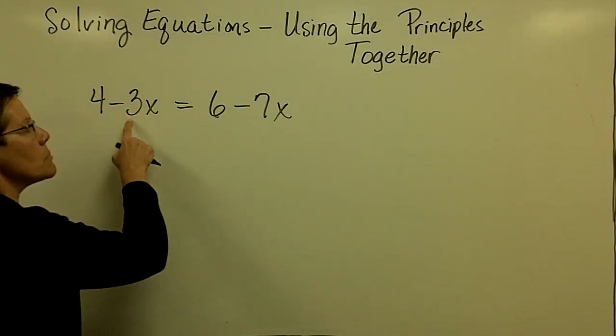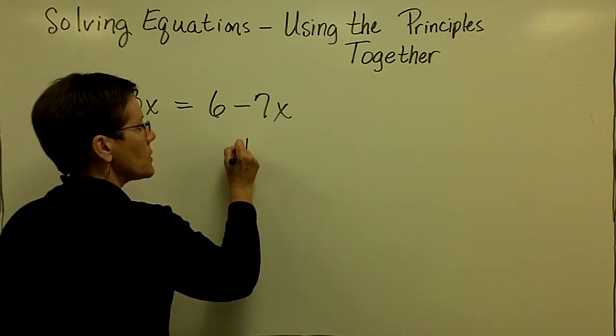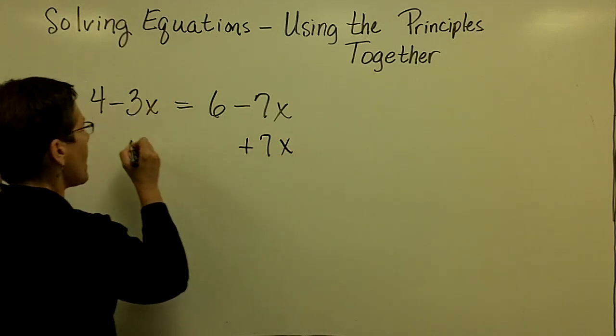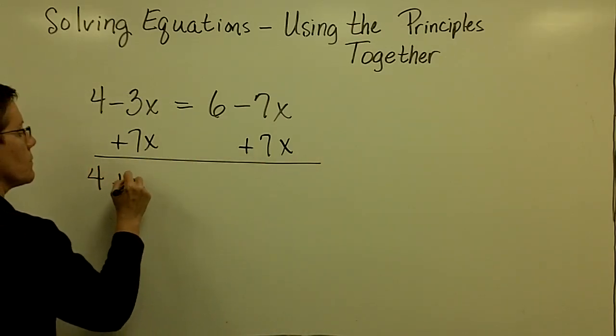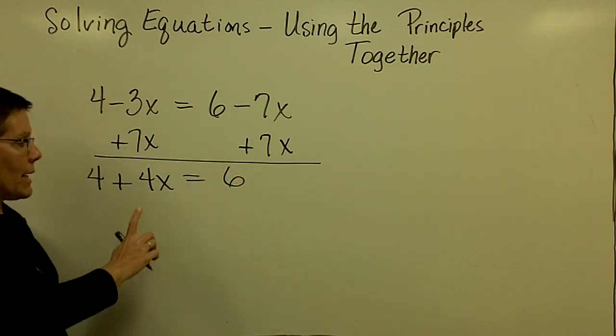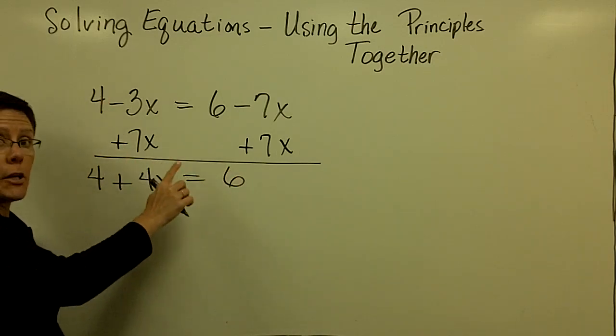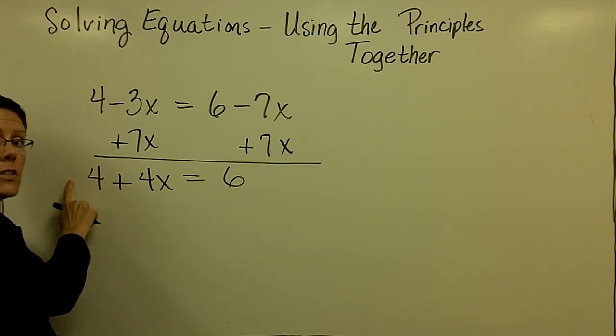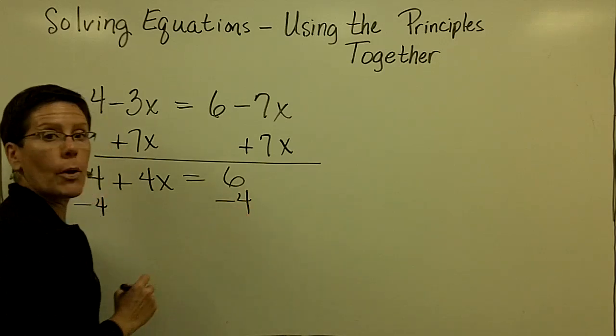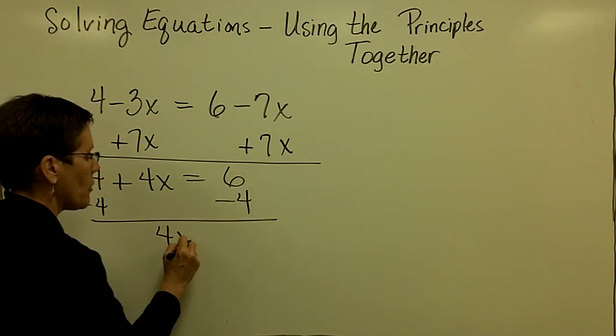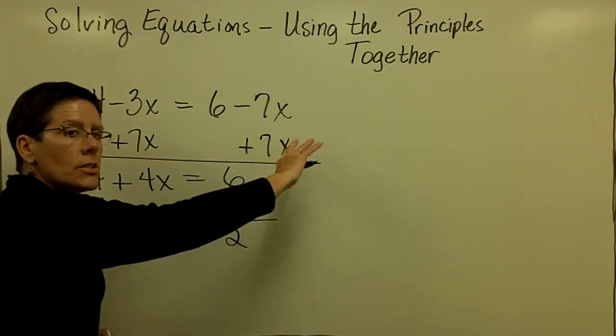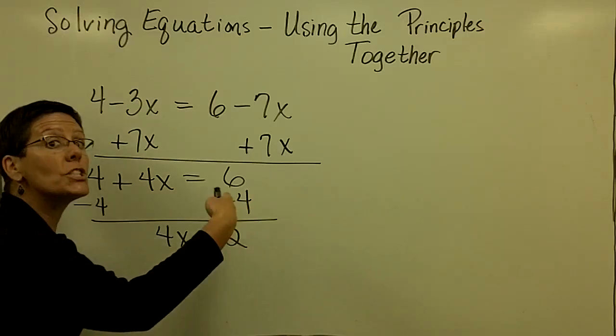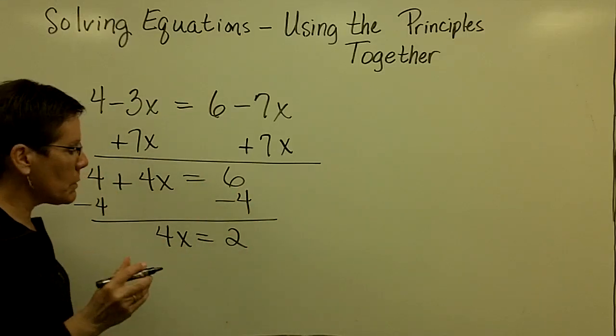And I'm not going to stray from my method. I just stick with it all the time. So this negative 7 is smaller than the negative 3. So I choose personally to add 7x to both sides of the equation. And then I want to isolate the term that's got the variable in it, the 4x. I've got to get rid of this 4, which is positive. So the way to get rid of it is to subtract 4 from both sides of the equation. And then I do have 4x all alone, and 6 minus 4 is 2.